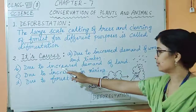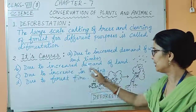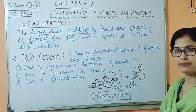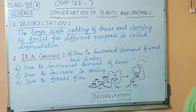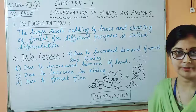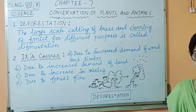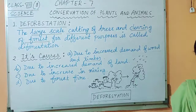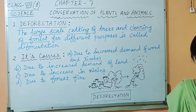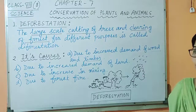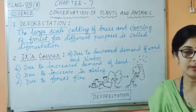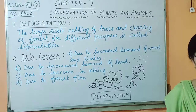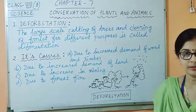The next cause is due to increased demand of land. Again, with increase in population, demand of land is increasing year after year for construction of buildings, factories, roads, highways, railway stations, and railway tracks.